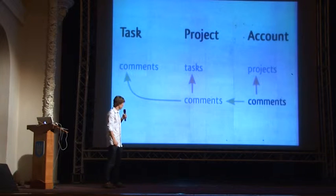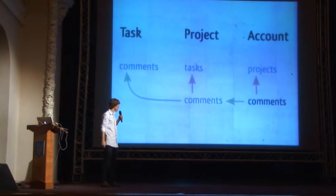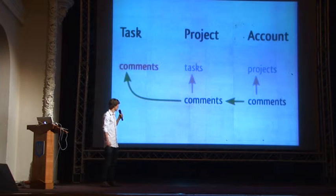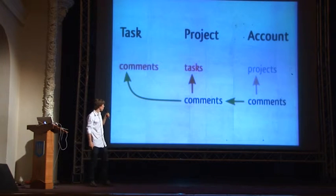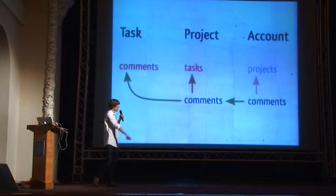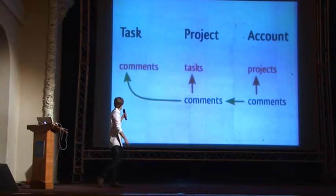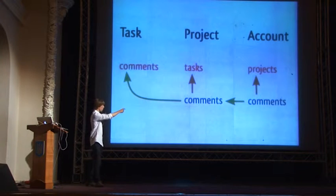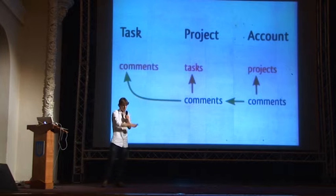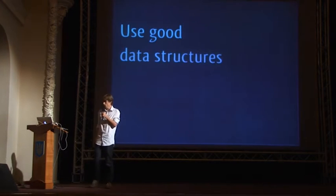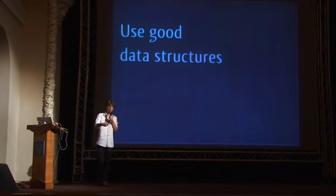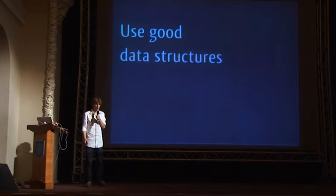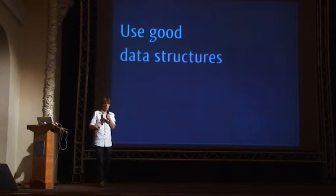And again, with the other example: first into the source association to comments on project, then to comments on task, stop there. Back up to comments on project, into tasks on project, back up to comments on project, back up to comments on account, and into projects on account. This is exactly the same list — comments, tasks, projects. Select all comments, inner join tasks, inner join projects. The great thing is I now had a data structure I could work with, and even though the initial specification of the associations was different, I could transform that into a data structure that was the same and generate the same SQL.